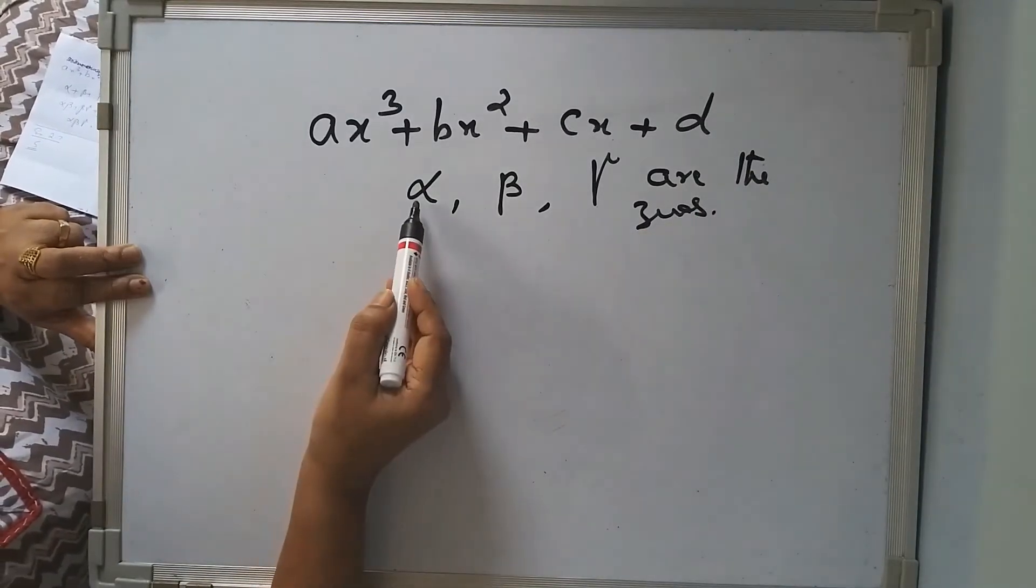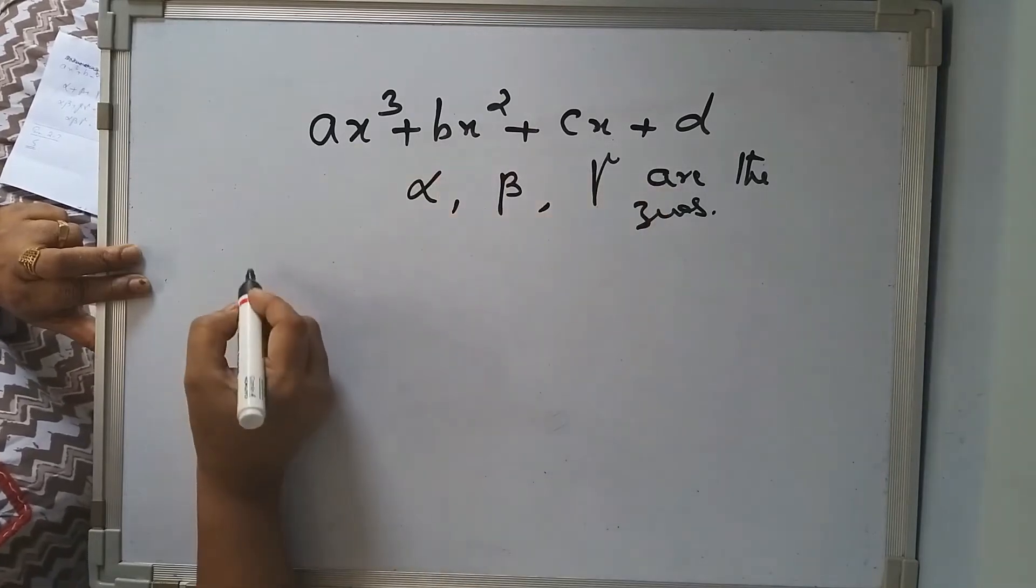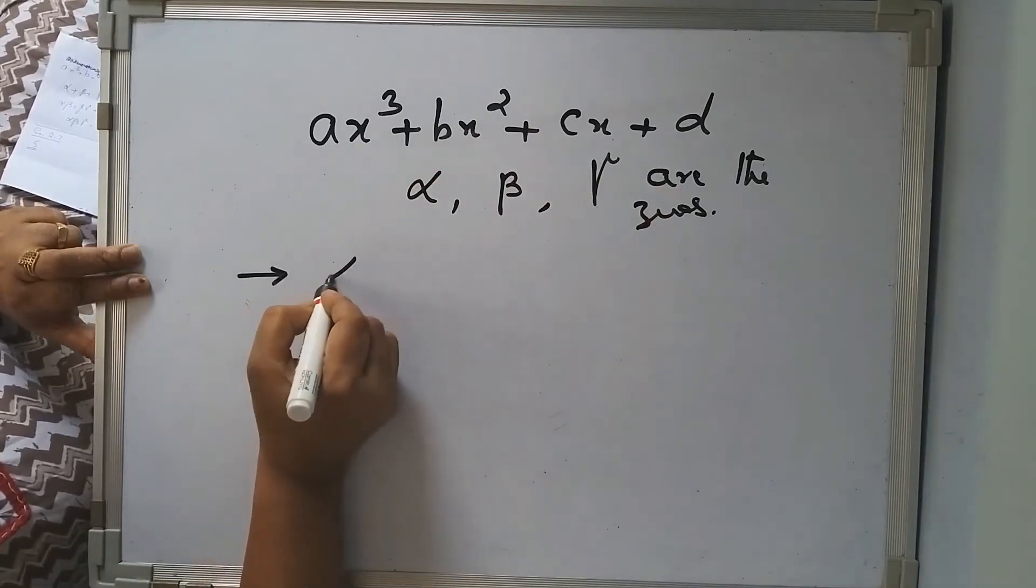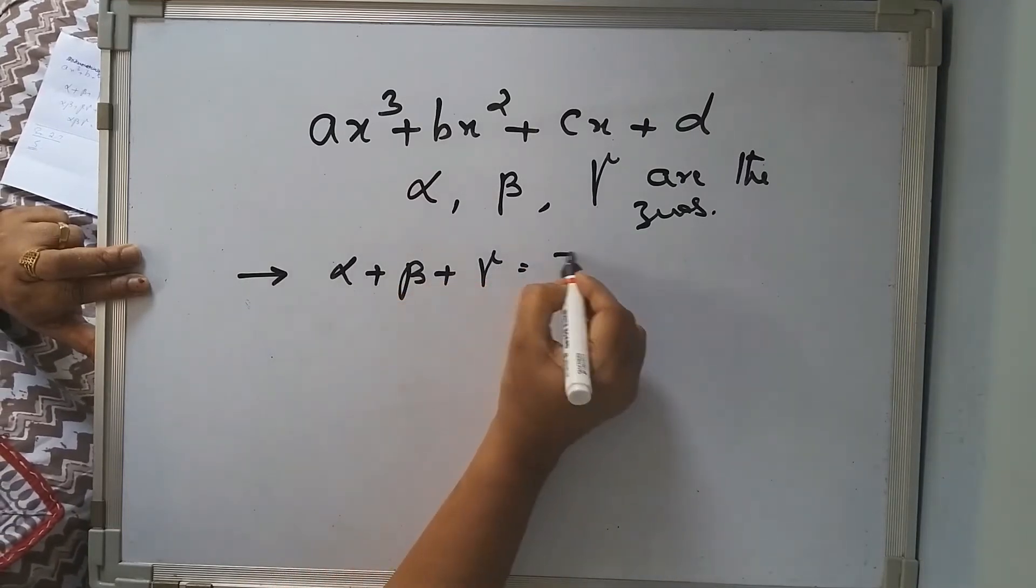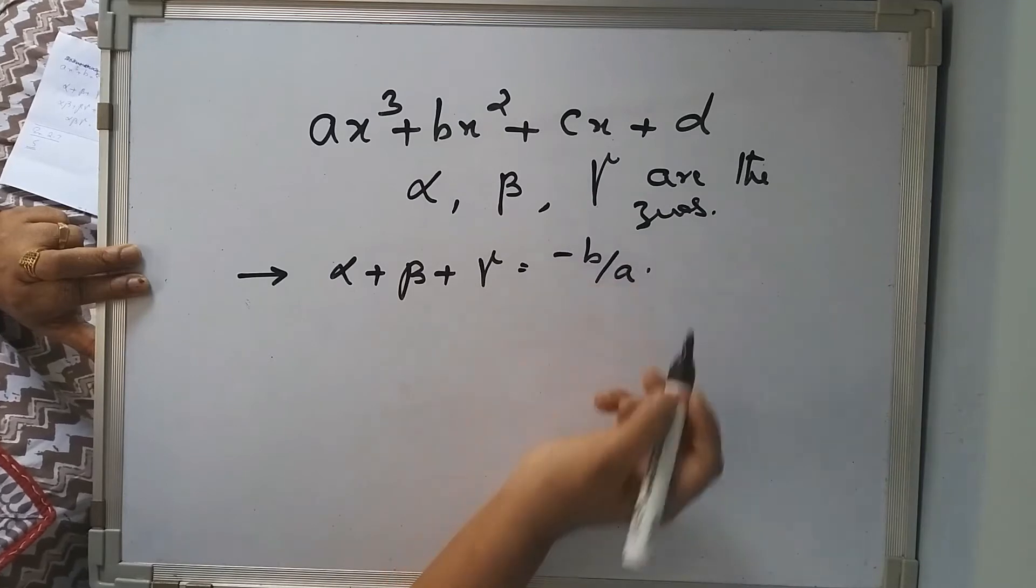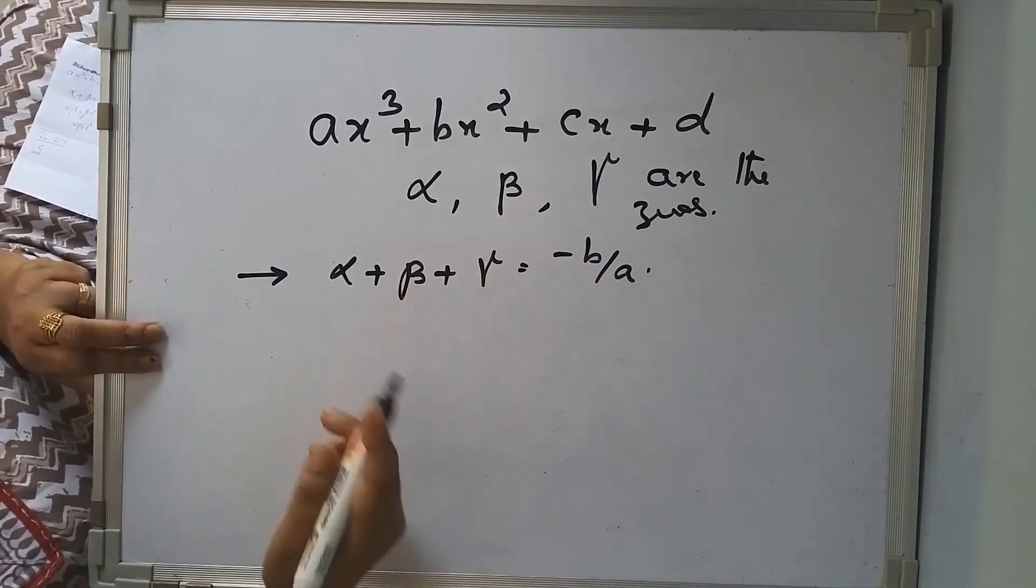Then there is a relation between alpha, beta, gamma and a, b, c, d. Namely, first one is alpha plus beta plus gamma is equal to minus b upon a. You can verify it in any cubic polynomial.